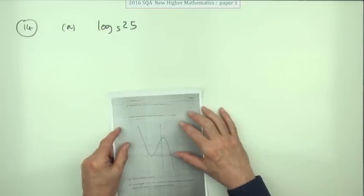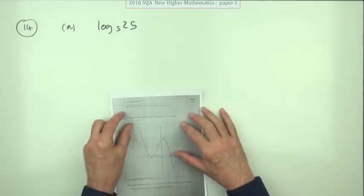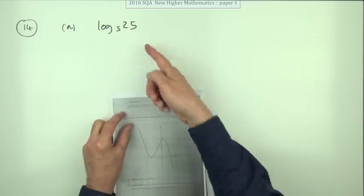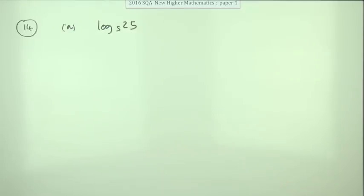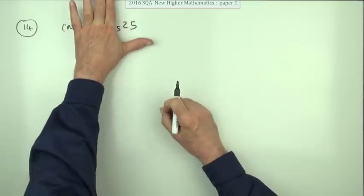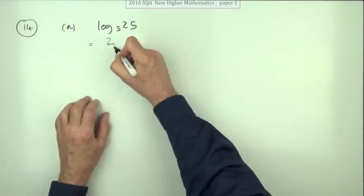Number 14 from the 2016 New Higher Maths paper, part A for one mark, it just says evaluate this. Well, quite simply by definition, log base 5 of 25 means what power of 5 produces 25, so the answer is 2.